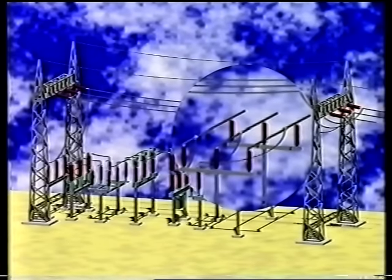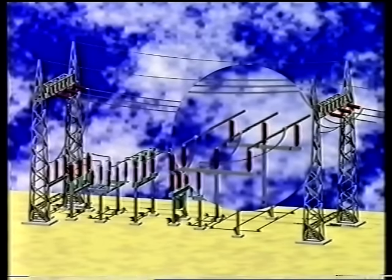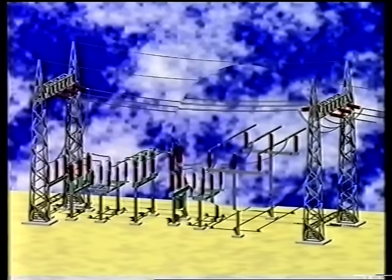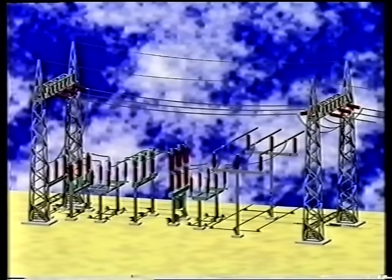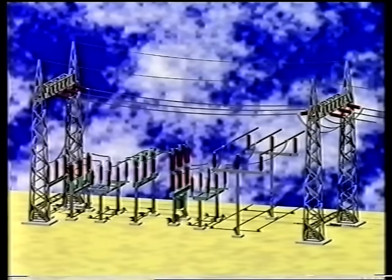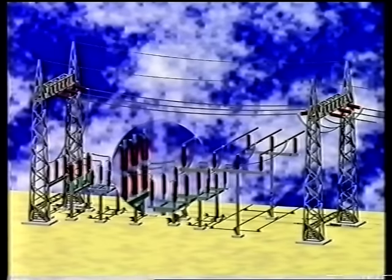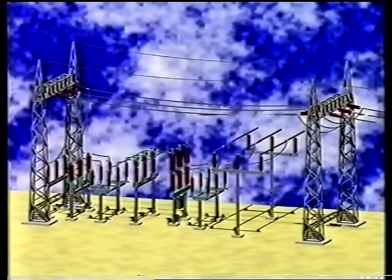Rigid conductors in high-voltage switchgear are, as a rule, made by tubes. As long as they are in a straight line, they may be calculated by IEC 60865. This is also possible with horizontal cable connections between components, or strained connections between steel structures.